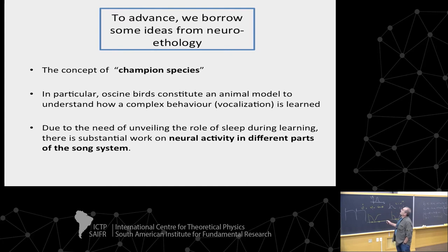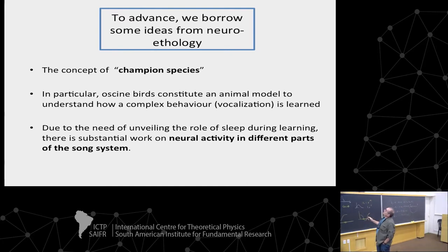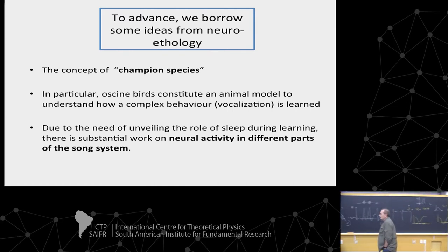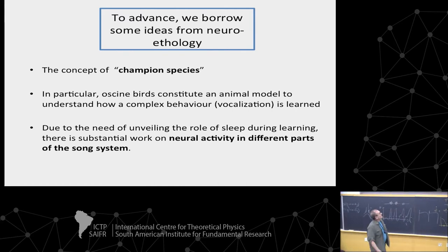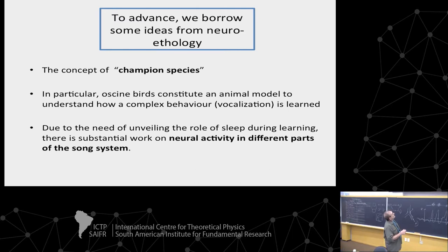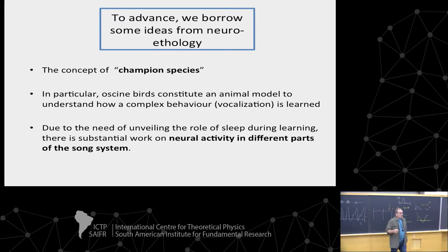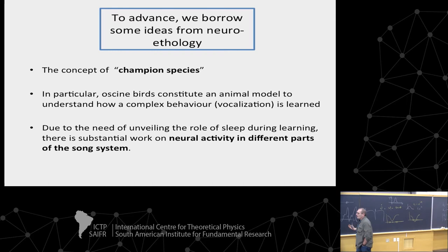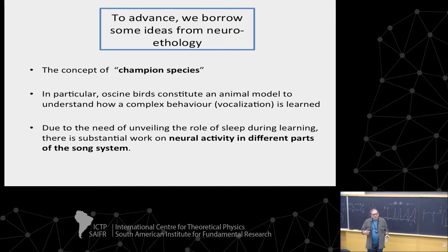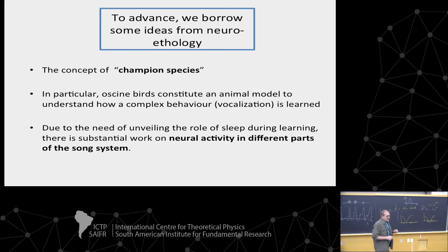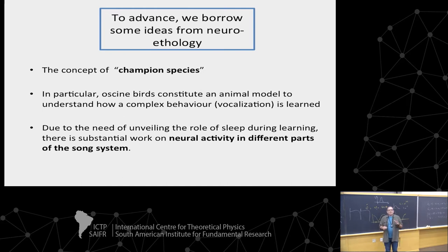What we can do is something that is done in biology a lot: borrow a concept from neuroethology, which is the concept of a champion species. Neuroethology is the branch of biology that studies the neural basis of behavior. It eventually studies neural coding, but always in the framework of behavior. One characteristic of this community is this concept of a champion species — in order to study a particular problem, you study one species where it is easy.